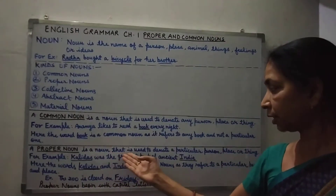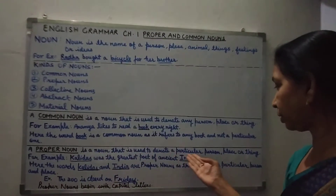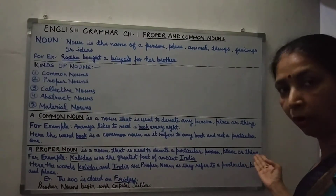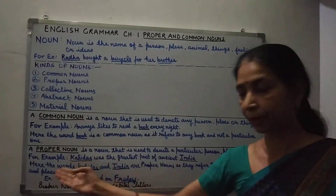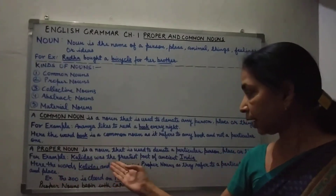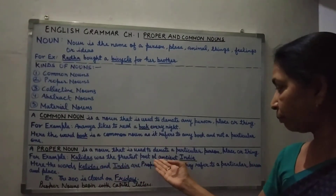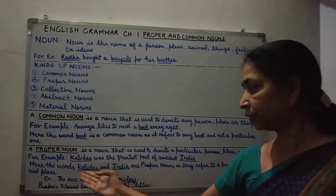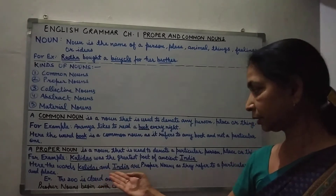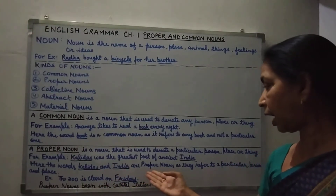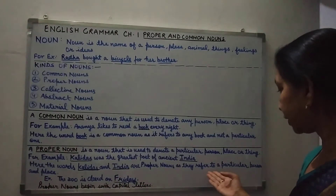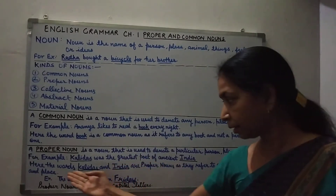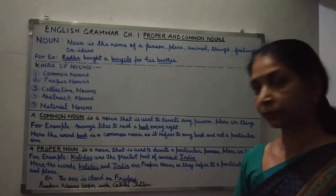A proper noun is the noun that is used to denote a particular person, place or thing. For example: Kalidas was the greatest poet of ancient India. Here the words Kalidas and India are proper nouns as they refer to a particular person or place.